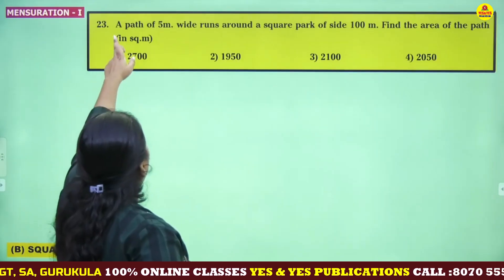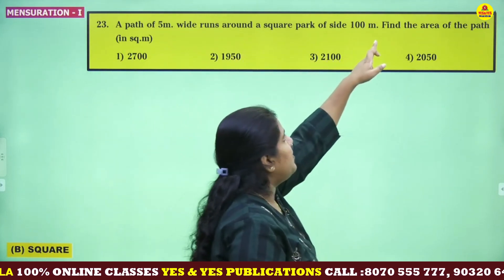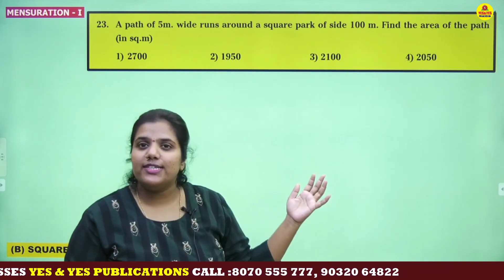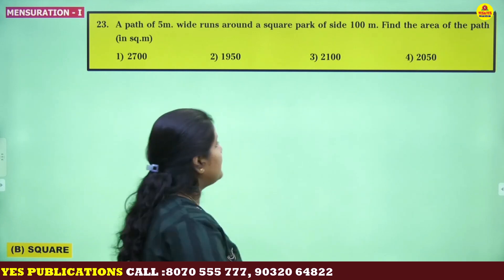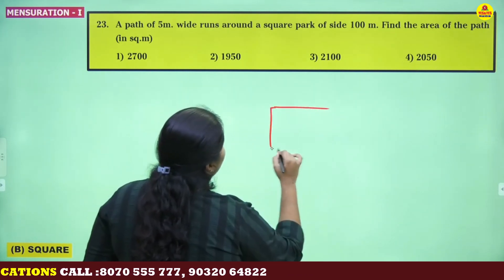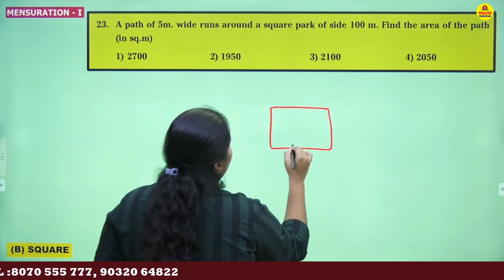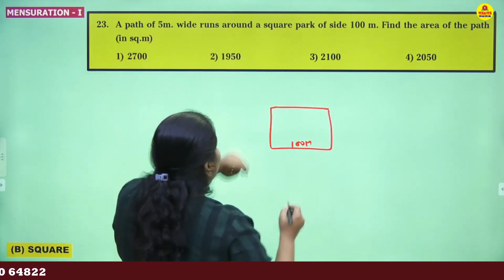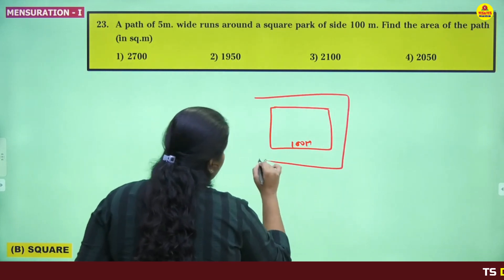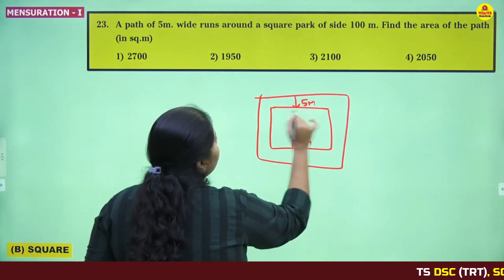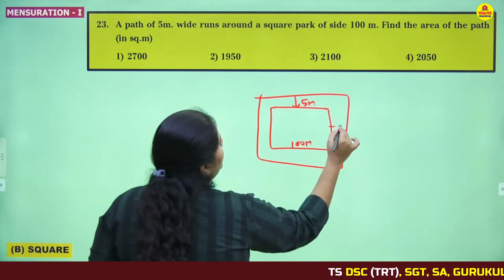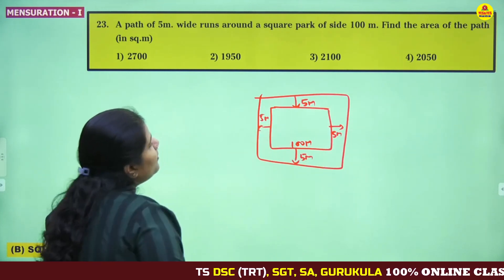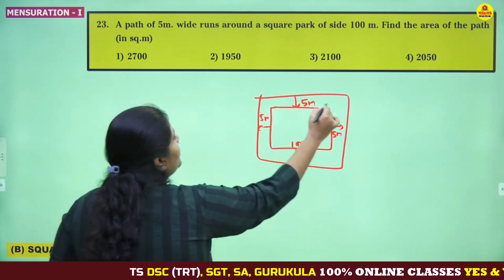Next: A path of 5 meters wide runs around a square park of side 100 meters. Find the area of the path. After doing problems on rectangles, it is becoming much easier to solve the same type of questions for squares. Draw the square — the side of the square is 100 meters. A path of 5 meters wide runs around the square, so the path width on all sides is 5 meters. We have to find the area of the path.